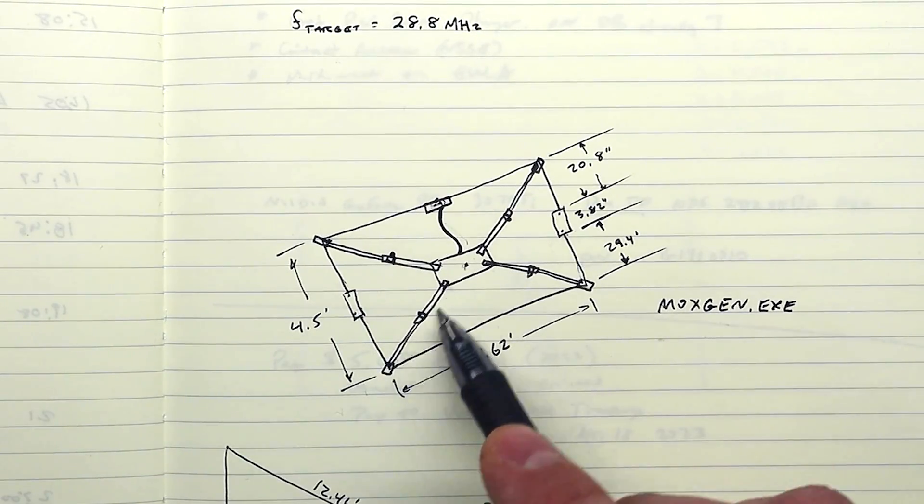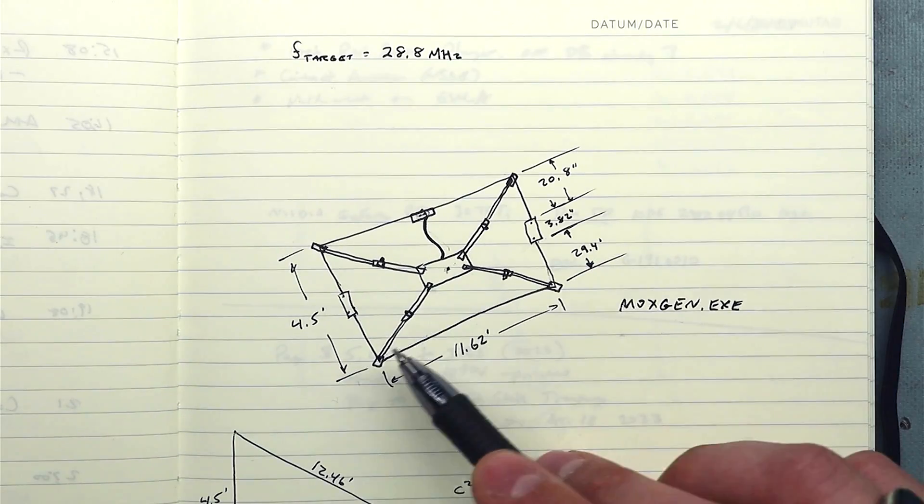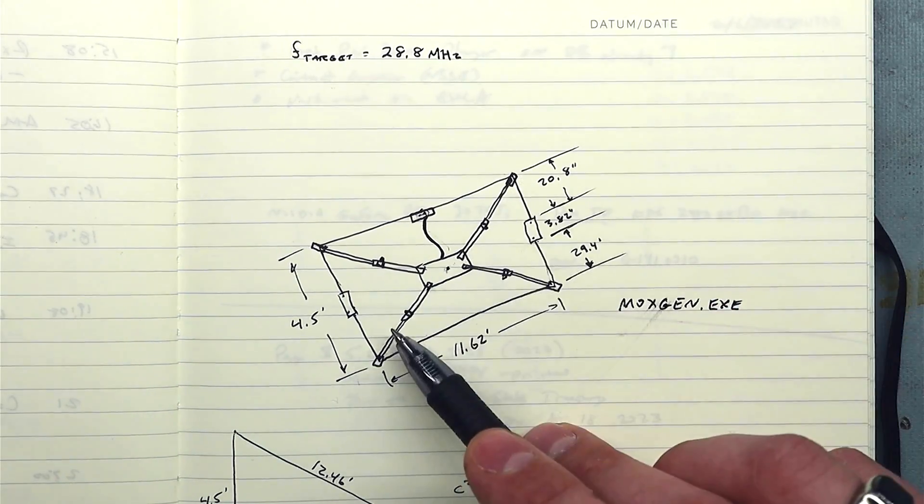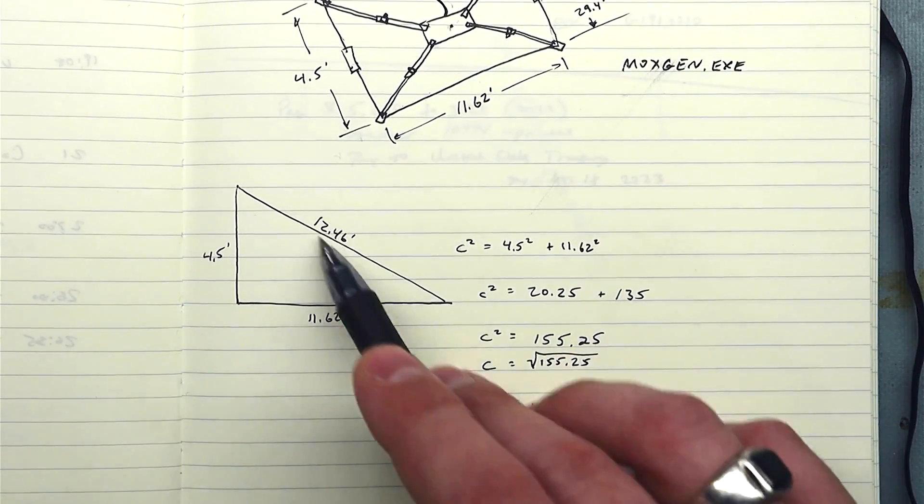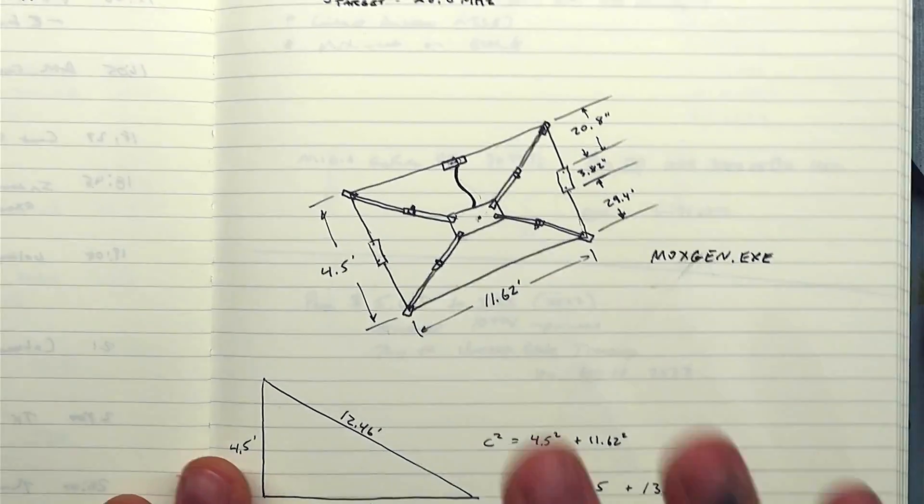So like we talked about earlier our driven element is this guy right here and our reflector is this one right here and these are plastic insulators that I just made. This whole thing is tensioned under these fiberglass rods that connect to the hub and I'll show you how the whole thing goes together. So I wanted to make sure that I had enough length in these tubes so just did a little Pythagorean theorem and I came up with about 12 and a half feet from here to here.